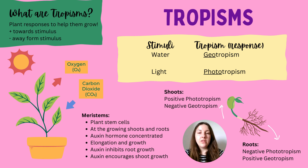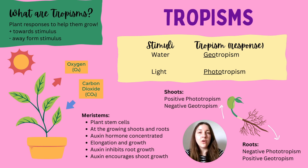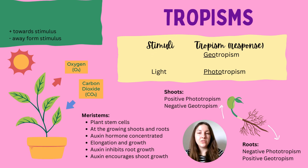It's also worth mentioning plant stem cells. Like animals, plants have undifferentiated cells called meristems, found specifically in the roots and shoots of growing plants. This is where many of the plant hormones are located, particularly a hormone called auxin, which helps with the growth and elongation of cells.